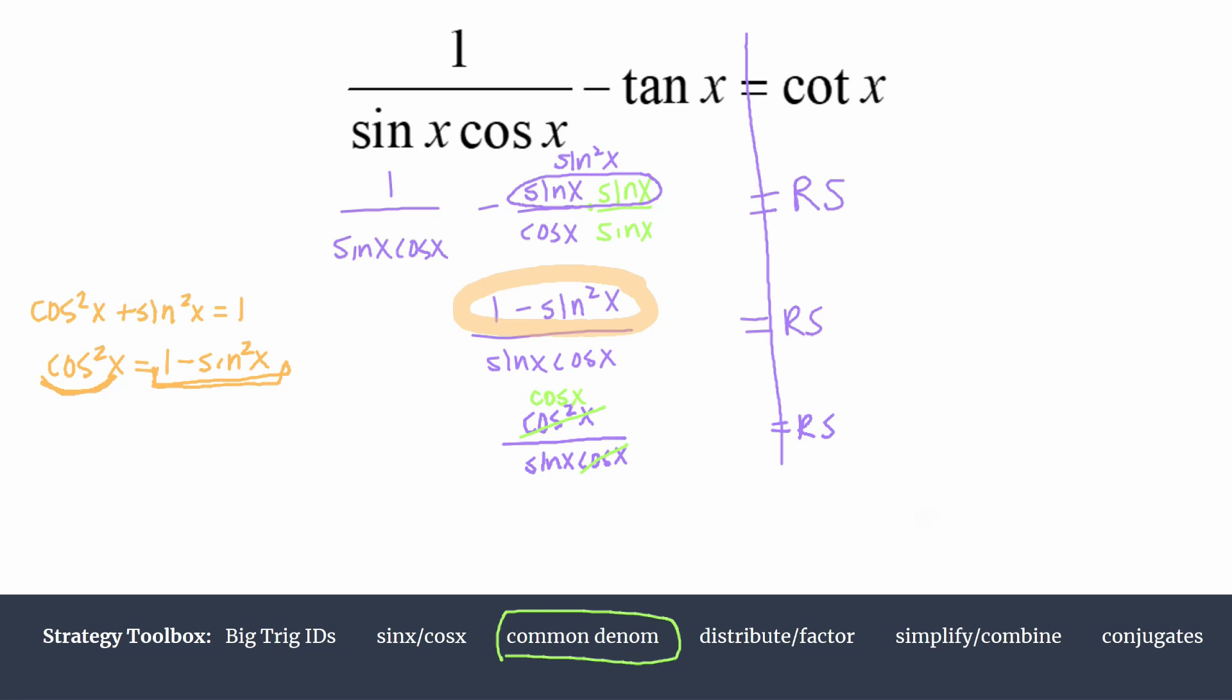If you'd like a clean step, you can rewrite: we have cosine over sine equals our right side. That's great—we are basically there because we know a quotient identity: cosine over sine is cotangent. And so we have proved this trig identity.